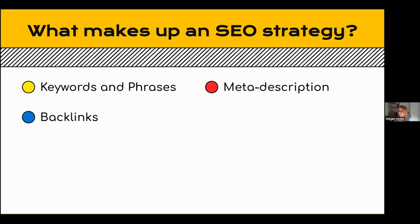Then we have backlinks — other websites linking to your website. For example, HubSpot pushes out lots of studies and research-based articles like 'Top Social Media Statistics of 2021.' If I was writing an article about using Instagram, I could use a statistic from a HubSpot article, link that web page as my source, and I've now given that HubSpot page a backlink. That tells Google this is a reputable page that people find valuable, giving more weight to it. You want other sites to link to your posts — that's what a backlink is.